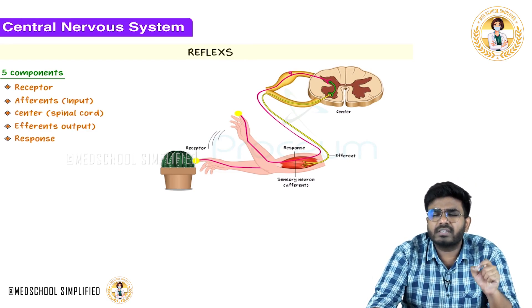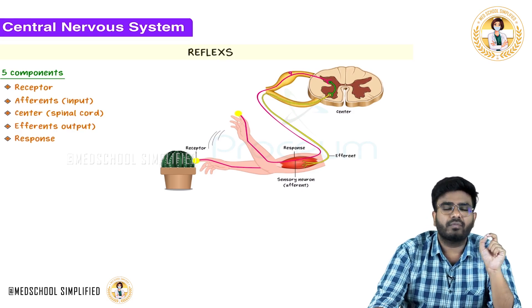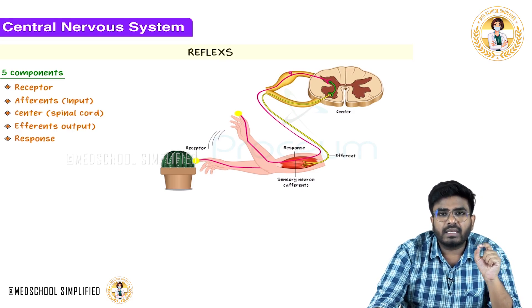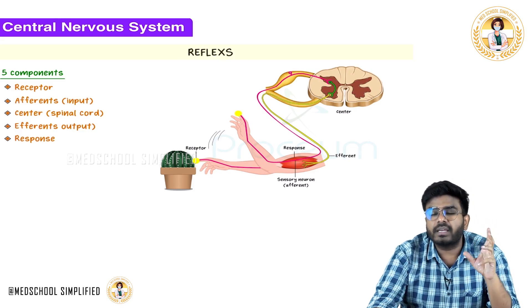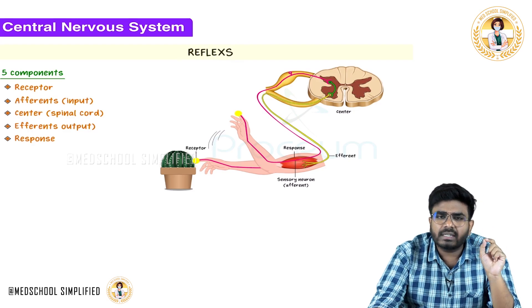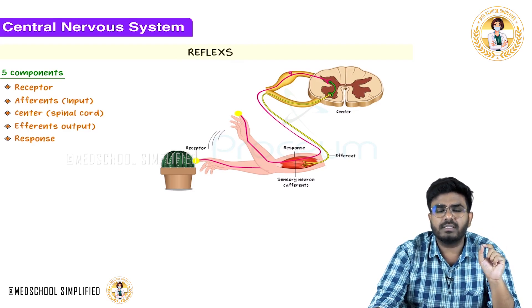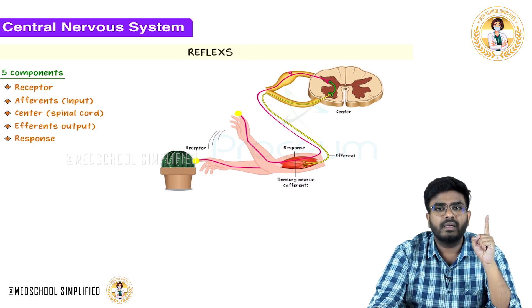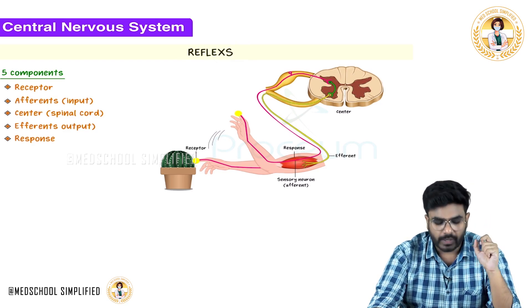So what actually happens? Whenever there is a harmful stimulus, we are not taking that information to the cortex. The information goes to the spinal cord and the decision-making is done in the spinal cord. So who is the center in reflexes? In reflexes, the center is the spinal cord.